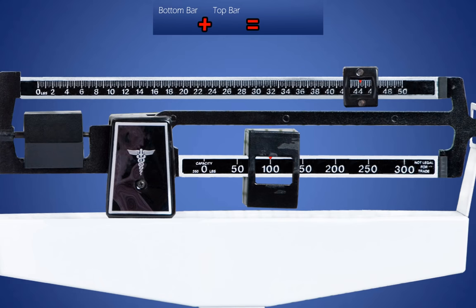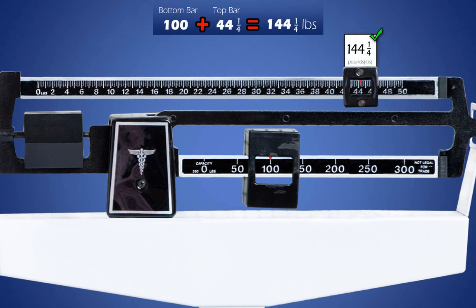What is the total weight displayed on the scale? If you stated 144 and 1 quarter pounds, you are correct. You add the bottom number of 100 to the top number of 44 and 1 quarter and your final answer is 144 and 1 quarter pounds.